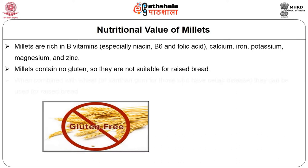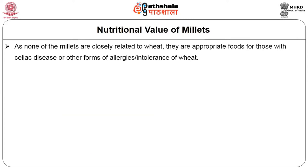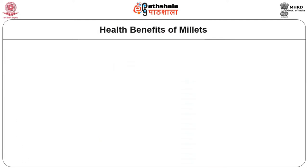Millets contain no gluten, so they are not suitable for raised bread on their own. When combined with wheat or xanthan gum, they can be used for raised bread — useful for those with celiac disease. Alone, they are suited for flat bread. As none of the millets are closely related to wheat, they are appropriate foods for those with celiac disease or other forms of wheat allergy or intolerance. However, millets are also a mild thyroid peroxidase inhibitor and probably should not be consumed in great quantities by those with thyroid disease.